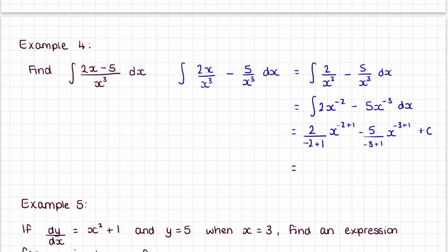Simplifying: 2 over (-2+1) gives negative 2, times x^(-1). Then minus 5 over (-3+1) — since we have two negatives this gives a positive — so we get plus 5/2 times x^(-2), plus c. You could rewrite this with positive powers, but there is no need.